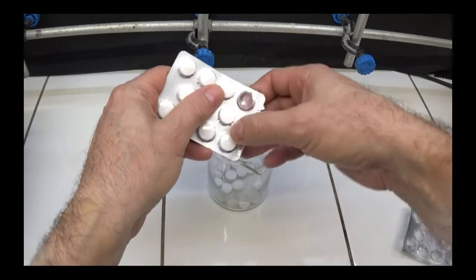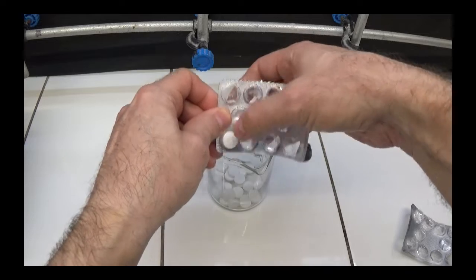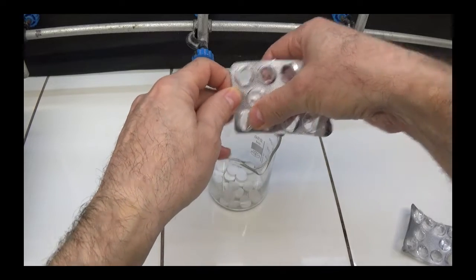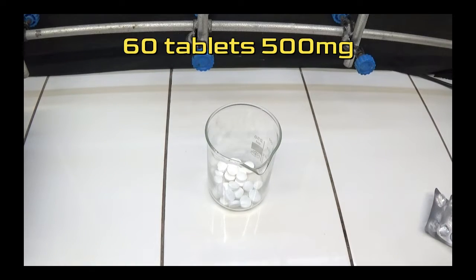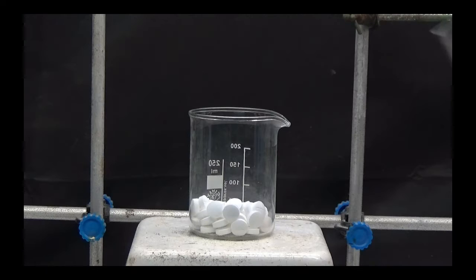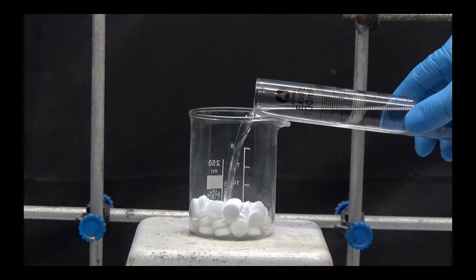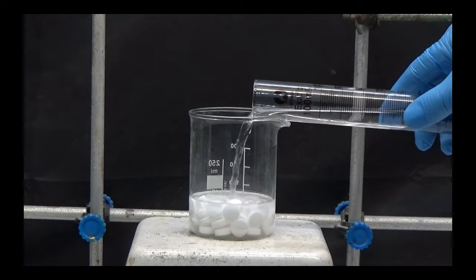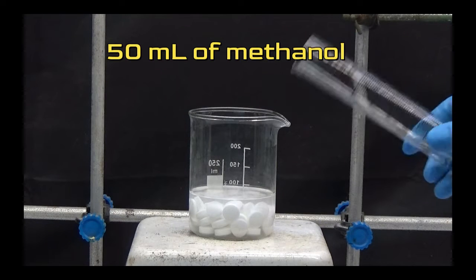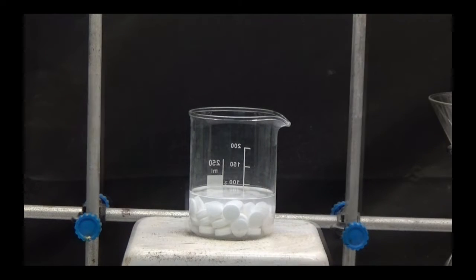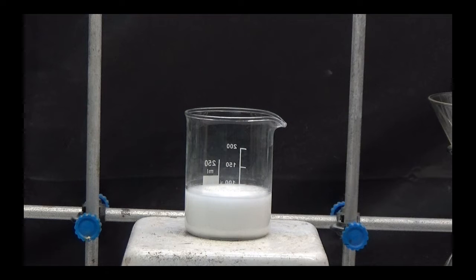First, we extract acetylsalicylic acid from commercial 500mg tablets. In a 250ml beaker, we put 60 tablets of 500mg of acetylsalicylic acid. Cover them with 50ml of methanol and let them rest for about 20 minutes until they disperse. We stir for 10 minutes.